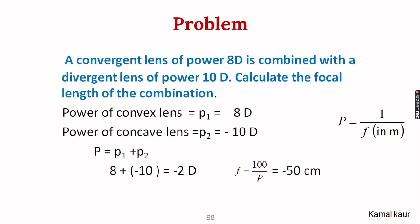Problem: A convergent (convex) lens of power +8 D is combined with a divergent (concave) lens of power −10 D. Combined power = 8 + (−10) = −2 D, so the combination behaves as a concave lens. Calculate the focal length: f = 100/P = 100/(−2) = −50 cm.